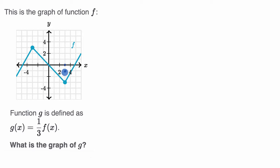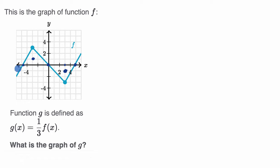So g(3) would be right over there. Likewise, g(-3) — well, f(-3) = 3, so g(-3) is going to be 1/3 of that, which equals 1. And f(0) = 0, so 1/3 of that is still zero, so g(0) is still going to be right there. That happens at the other zero crossings as well, and we already have a sense of what this graph is going to look like.